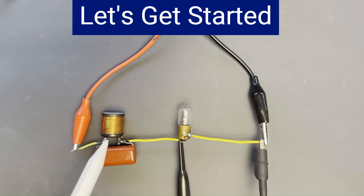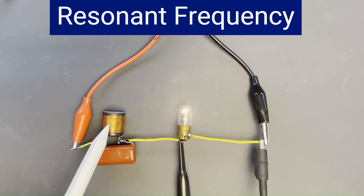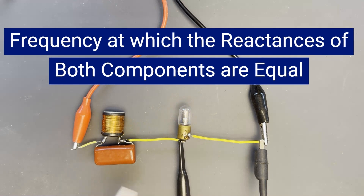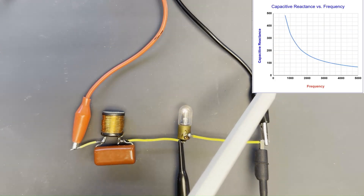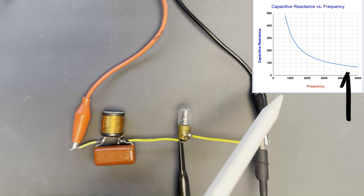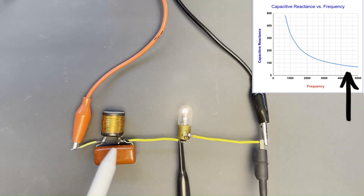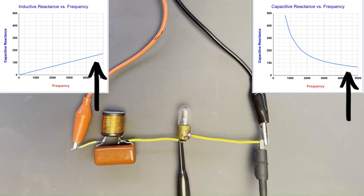The resonant frequency for a capacitor and inductor is the point at which the reactance of both components is equal. The reactance of a capacitor decreases with frequency, ultimately approaching zero ohms, as shown in this frequency response graph. Conversely, with an inductor the reactance increases with frequency, as shown in this graph, so as you increase frequency its reactance approaches infinite ohms.